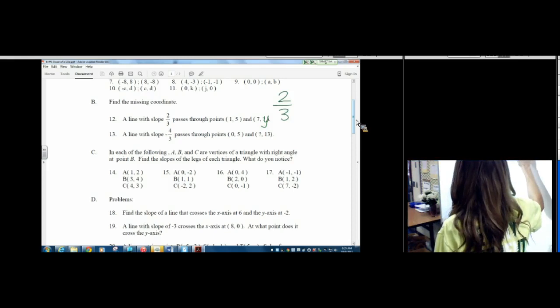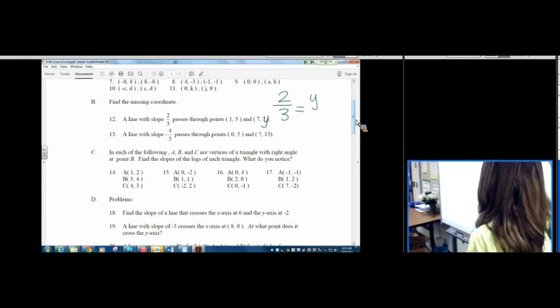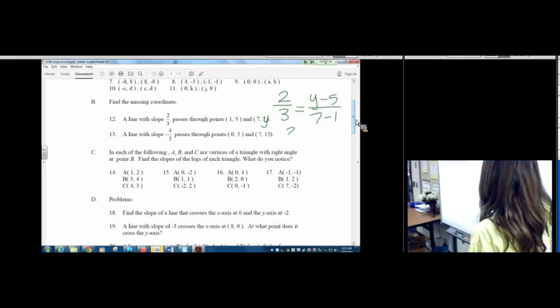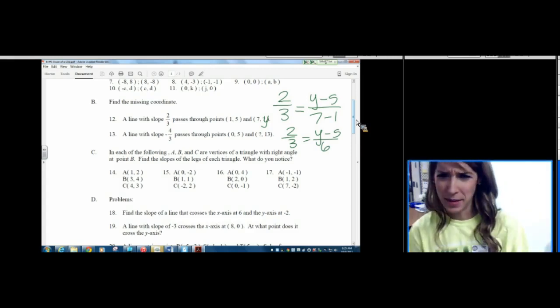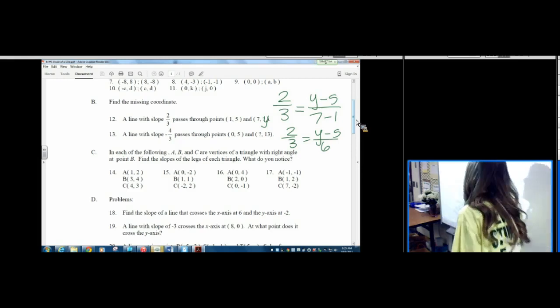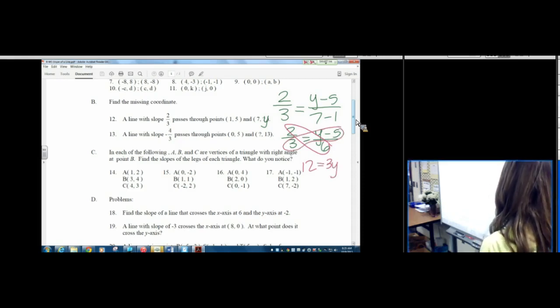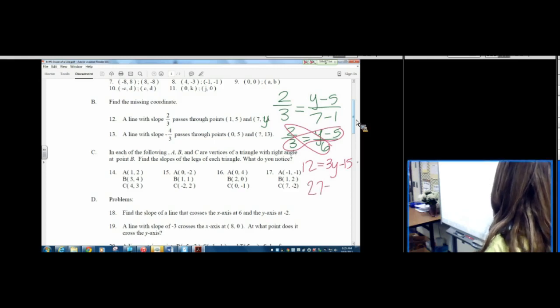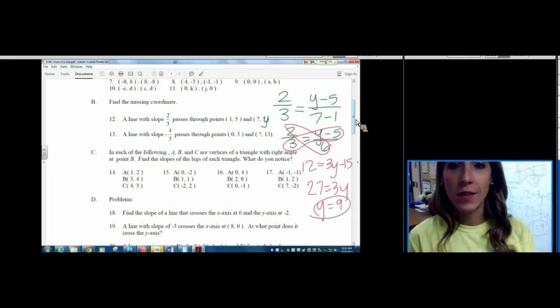Okay, so the line has a slope of 2 thirds. That's the answer. So 2 thirds equals, and now we're going to write our slope formula. Y minus Y over X minus X. We're going to clean it up a little bit. 2 thirds equals Y minus 5 over 6. You can cross multiply from here. 2 times 6 is 12. 3 times Y minus 5 is 3Y minus 15. Add 15 to both sides. 27 equals 3Y. Y is 9. Are we okay with that? So you set the slope formula equal to the given slope. You simplify, then you cross multiply.